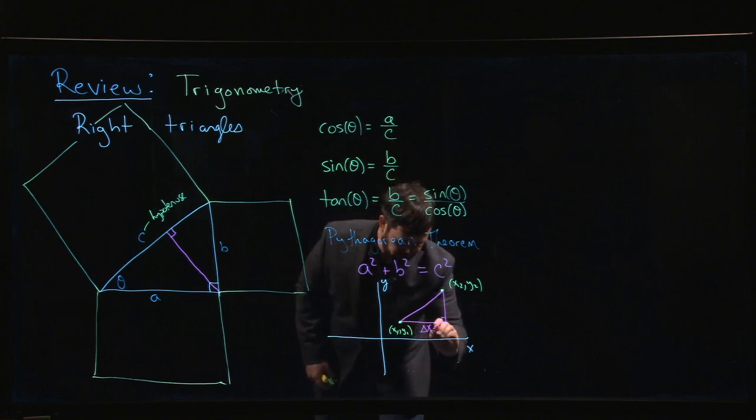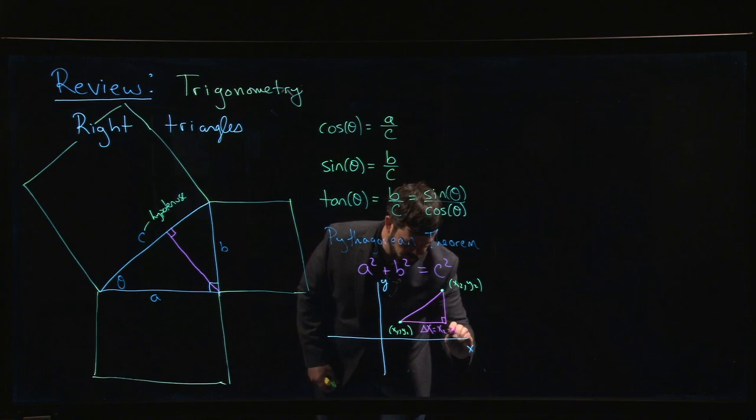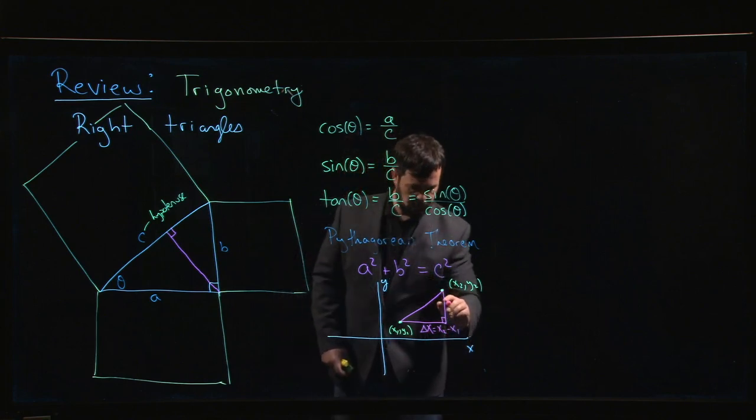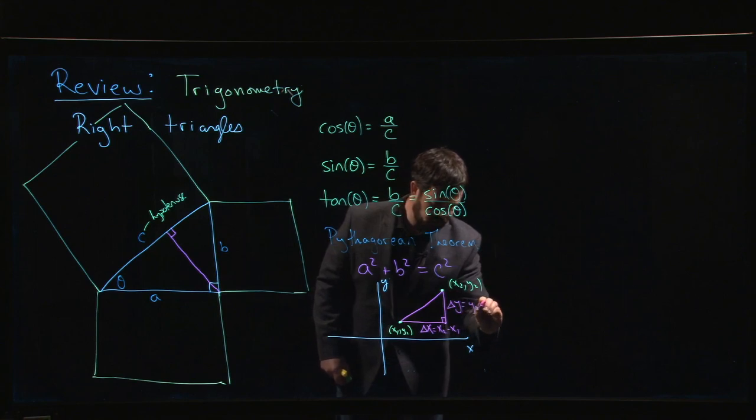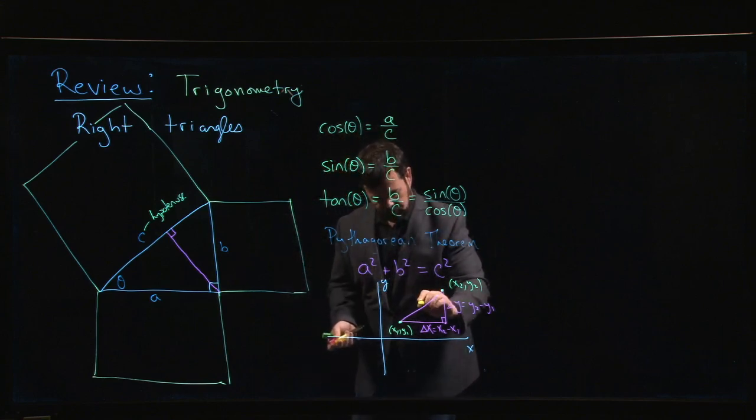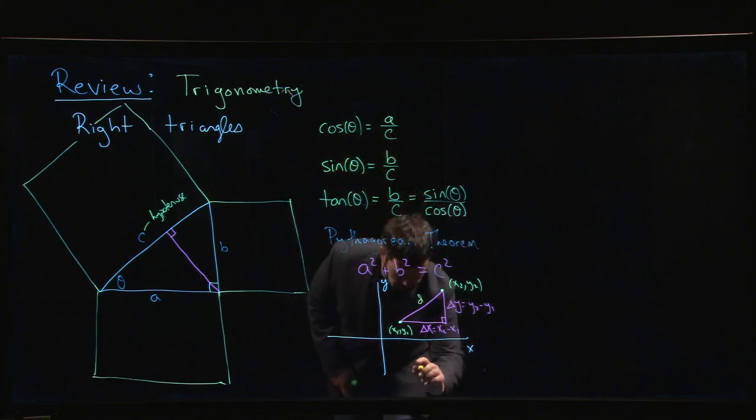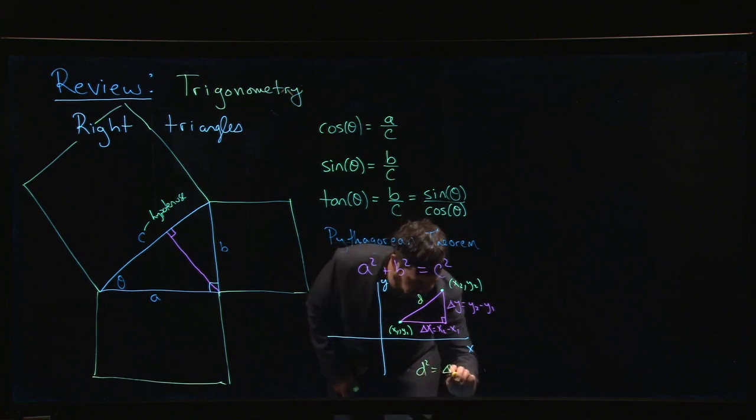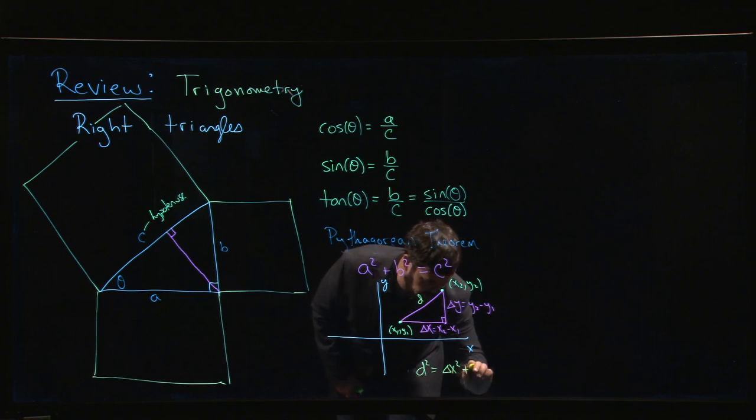This side length here, delta x is x2 minus x1. This side length here, delta y, y2 minus y1. And the Pythagorean theorem says that if you're interested in this distance d, that d squared should be delta x squared plus delta y squared.